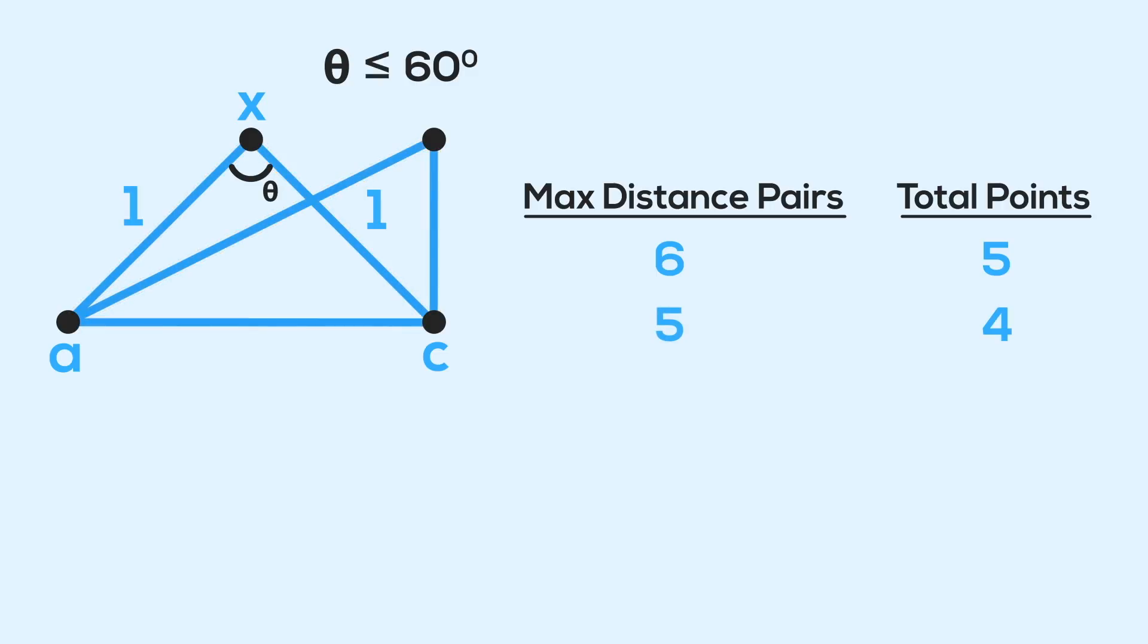But this is a contradiction, because we assumed the five points originally was the minimum value of N, for which our original statement was false. But we just found one smaller, where N is four.